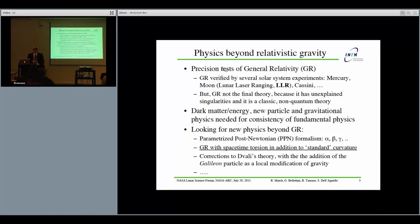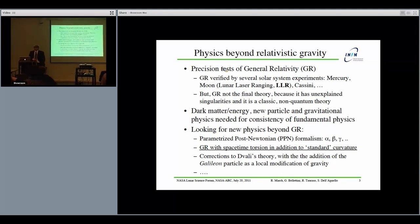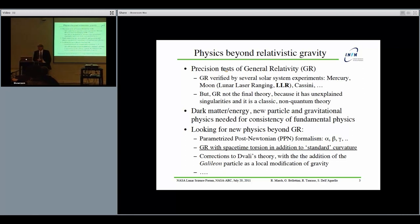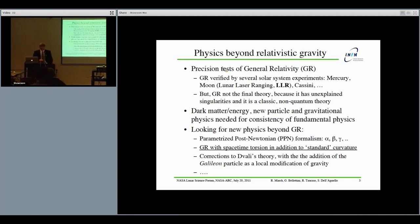Many tests of general relativity have been done with solar system experiments, in particular with Mercury, the perihelion advance, with the Moon, and the curvature of space-time has been measured with the Cassini mission to Saturn.